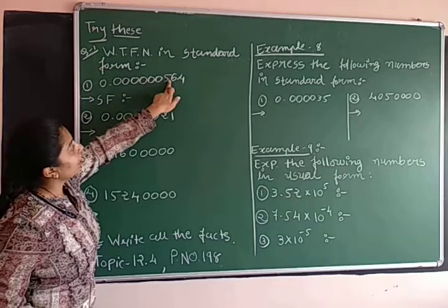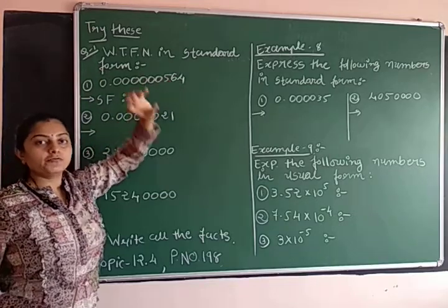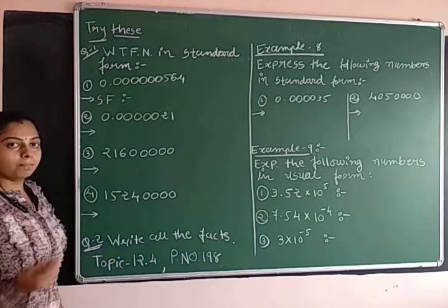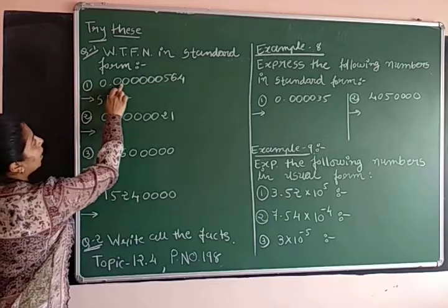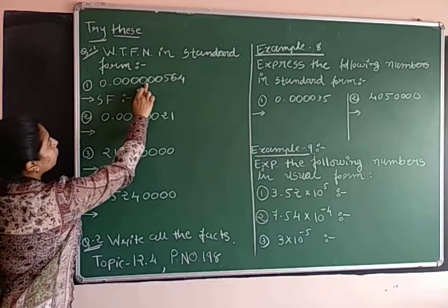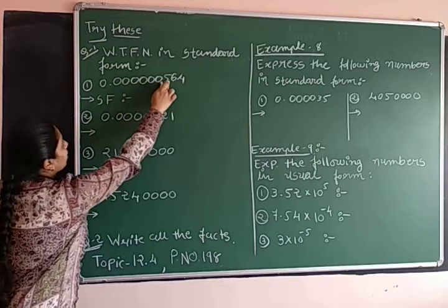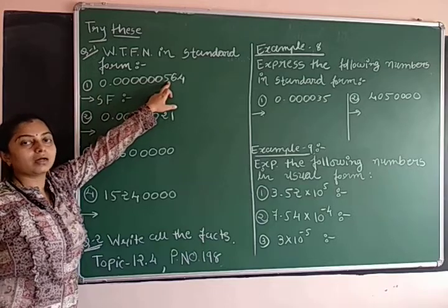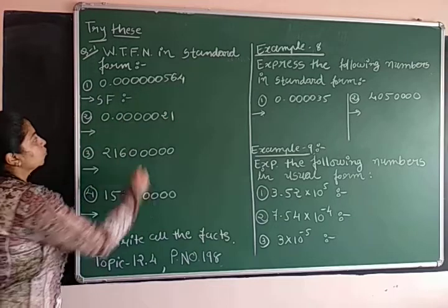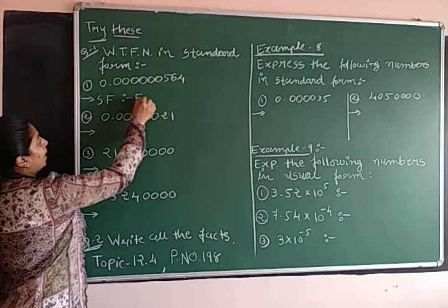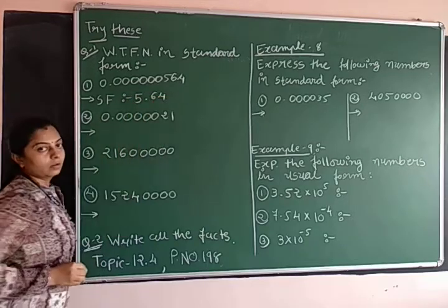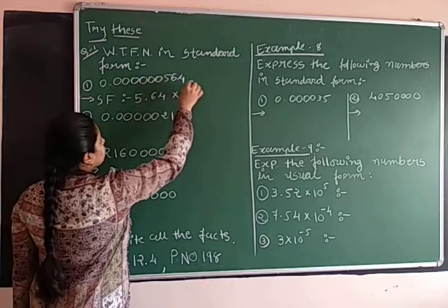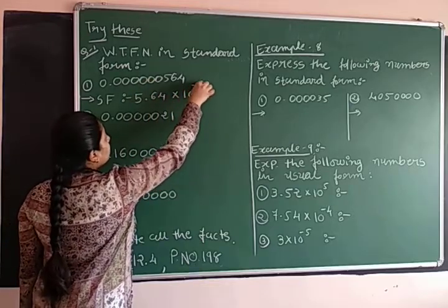So point will move. We have to count. Point is given over here. 1, 2, 3, 4, 5, 6, 7. If you will move 7 steps, the point will come after 5. So the number will be 5.64. And how many steps we move? 7. So 10 raised to minus 7.